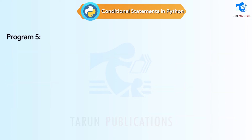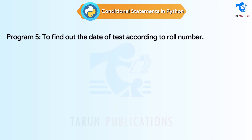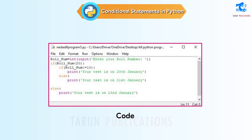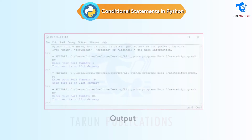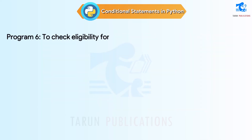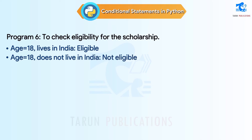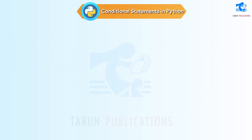Program 5: To find out the date of test according to roll number — roll numbers 1 to 10: test on 20th January; 10 to 20: test on 21st January; 20 onwards: test on 23rd January — shown with code and output. Program 6: To check eligibility for the scholarship — age equal to 18 and lives in India: eligible; age equal to 18 but does not live in India: not eligible; age under 18: not eligible — shown with code and output.